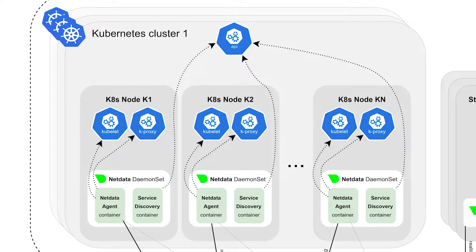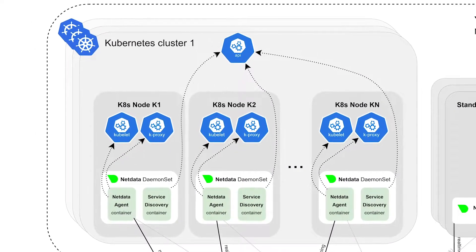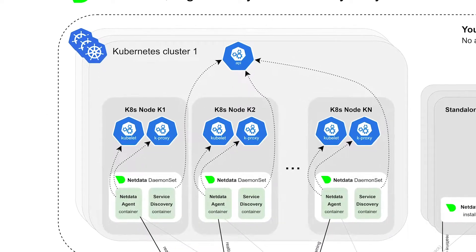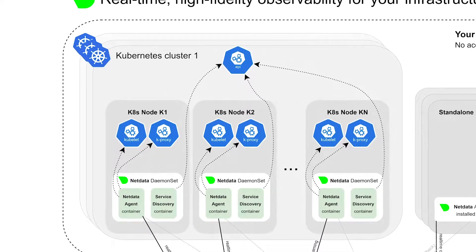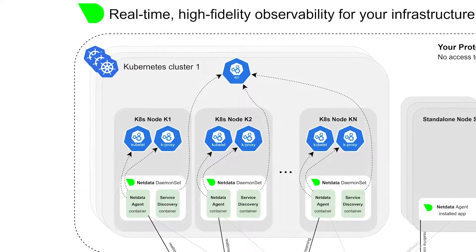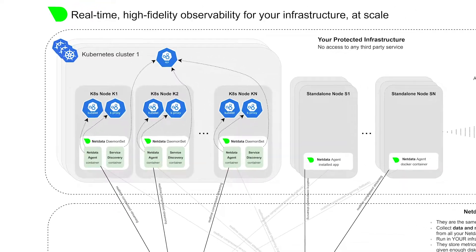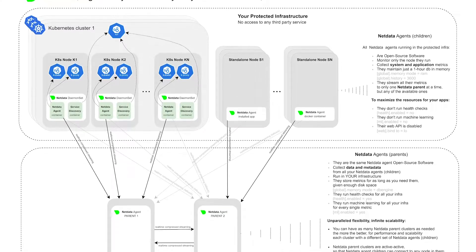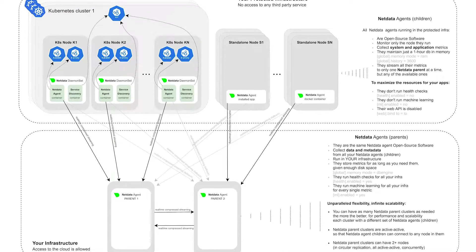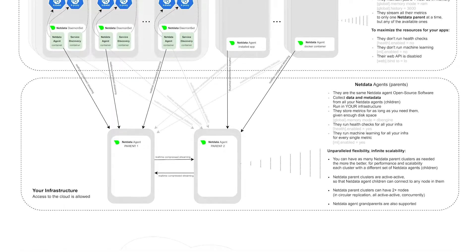But why is Kubernetes monitoring complex? Kubernetes is a multi-layered solution. The entire deployment is a cluster, and inside its cluster are nodes running multiple pods, which are the main components that handle your containers, and the nodes and pods are managed by the control plane. That's a lot of stuff, and monitoring or troubleshooting such a beast is super complex.